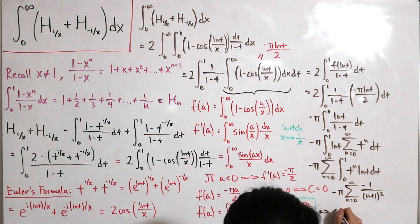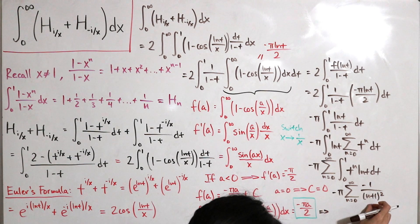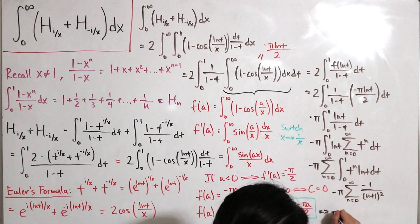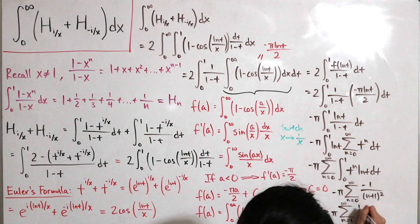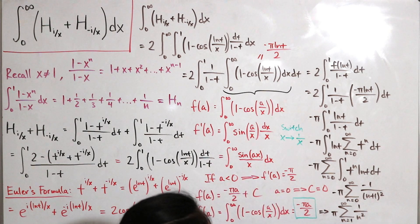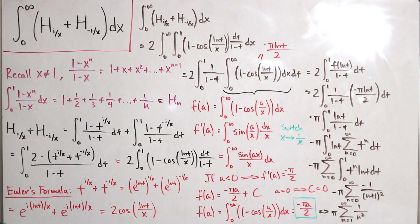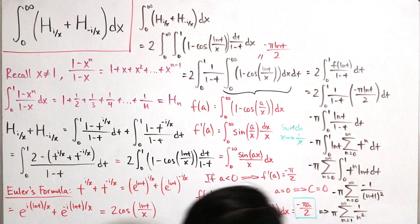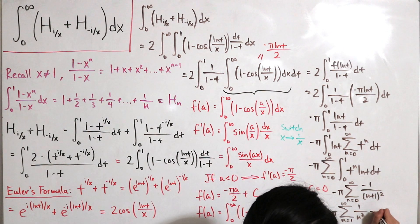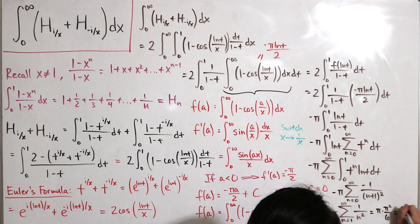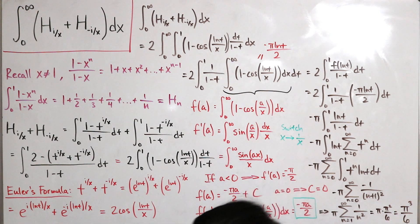The negatives cancel, giving π · Σ_{n=0}^∞ 1/(n+1)². Re-indexing from n=1, this is π · Σ_{n=1}^∞ 1/n², which is Basel's problem — equivalently the Riemann zeta function ζ(2) = π²/6. Therefore the final answer is π · π²/6 = π³/6.